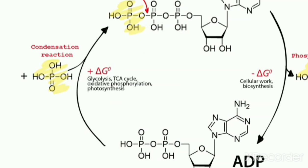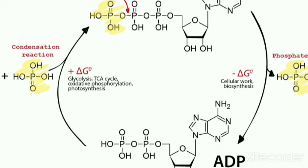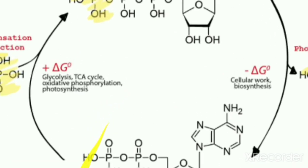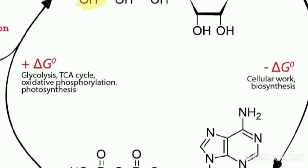Looking at the detailed structure of ATP: ATP is a nucleotide that consists of three main structures — a nitrogen base, which is adenine; a sugar, which is ribose; and a chain of three phosphate groups bound to the ribose. You can see the general structure of ATP: adenine joined to ribose, and this sugar is joined to three different phosphate groups.